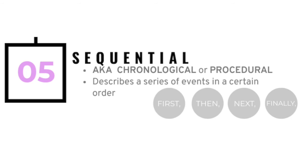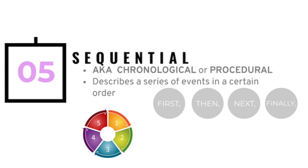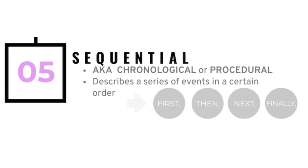The sequential text structure can also be referred to as chronological or procedural writing. This format describes events in the order in which they happen and will most likely utilize transitions to show time or order. Sequential writing can also detail a specific process.